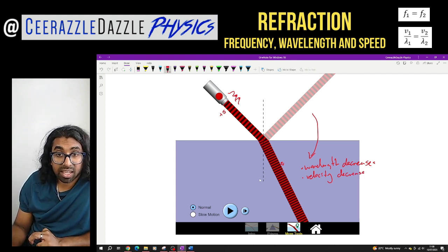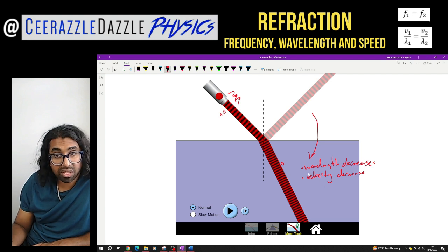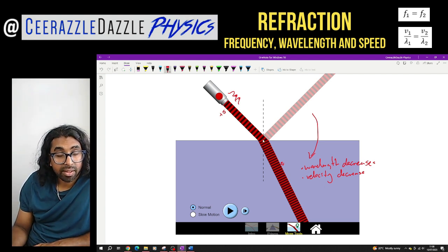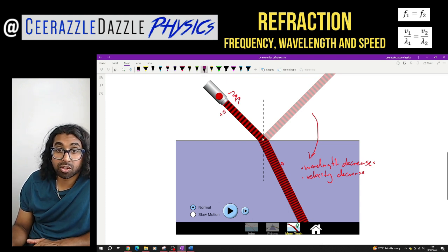But what about the frequency here? What about the frequency? So we've talked about the velocity. We've talked about the wavelength. But what about the frequency?